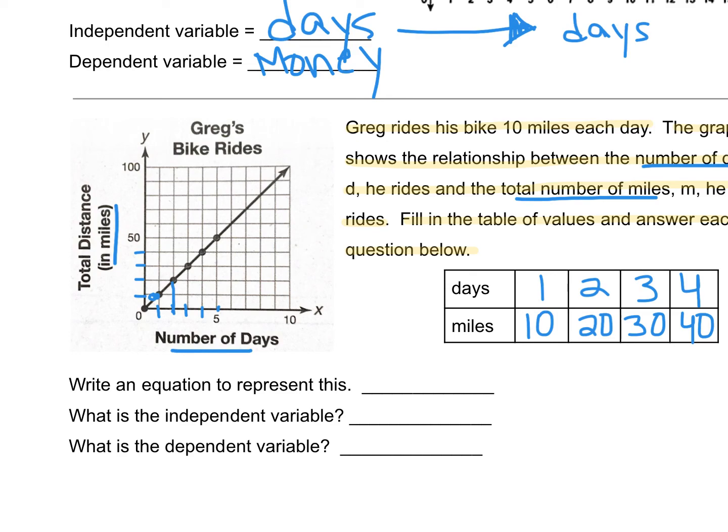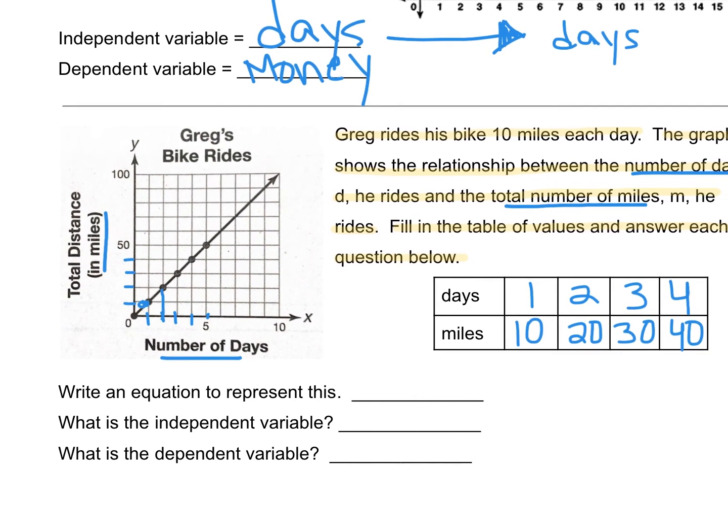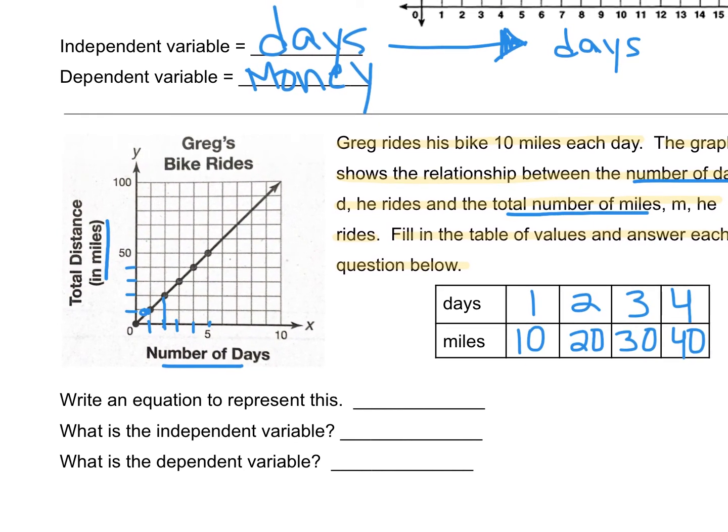So we want to write an equation to represent this. When we look here, what are we doing to the days to get to the miles? What did we do to 1 to get to 10? What are we doing to 2 to get to 20? 3 to get to 30. That pattern, we're multiplying our days by 10. So however many days he rides, we have to multiply that by 10 to get the miles. So we could say 10d, 10 times the number of days, is going to equal the miles. 10d equals m.